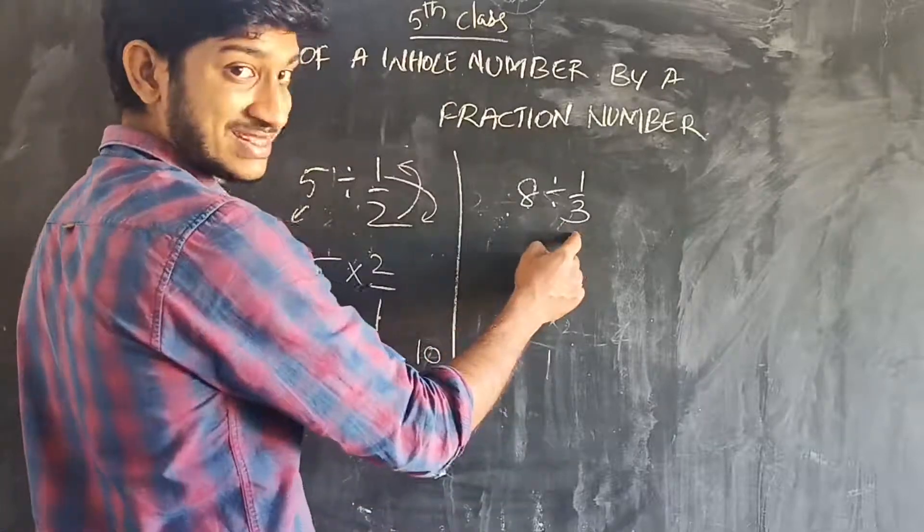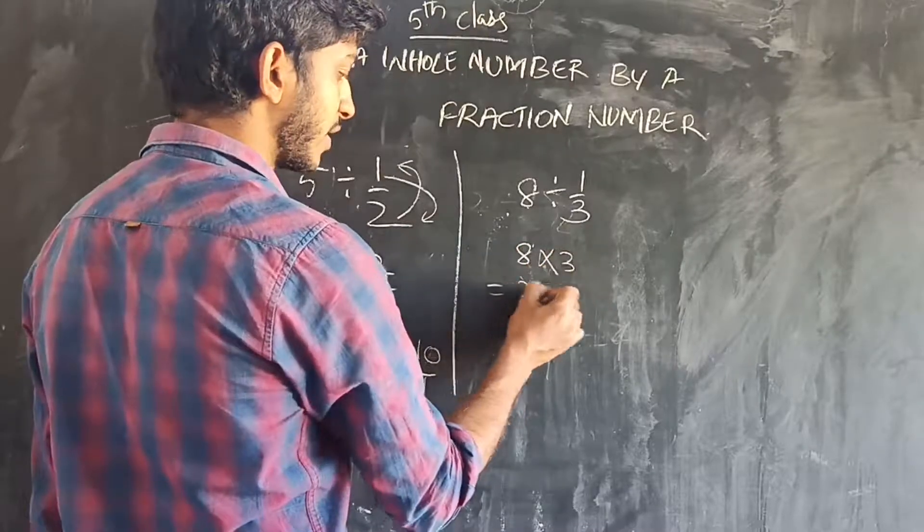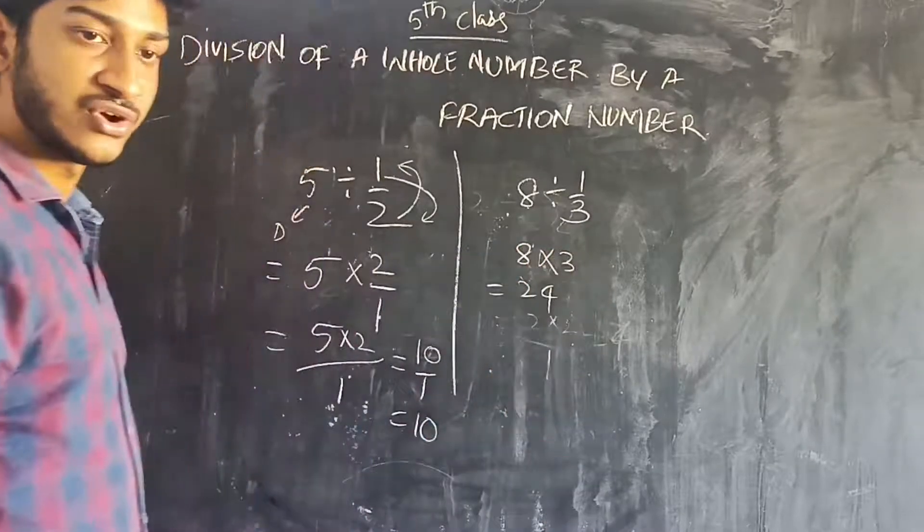Same. So, reciprocal of 1 by 3 is 3. So 8 into 3 is equal to 24. Okay children, don't confuse.